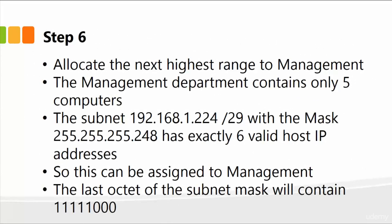And similarly, step six: allocate the next highest range to management, which is our last department and contains only five computers. The subnet mask with slash 29 — a mask of 255.255.255.248 — has exactly six valid host IP addresses, so this can easily be assigned to the management department.